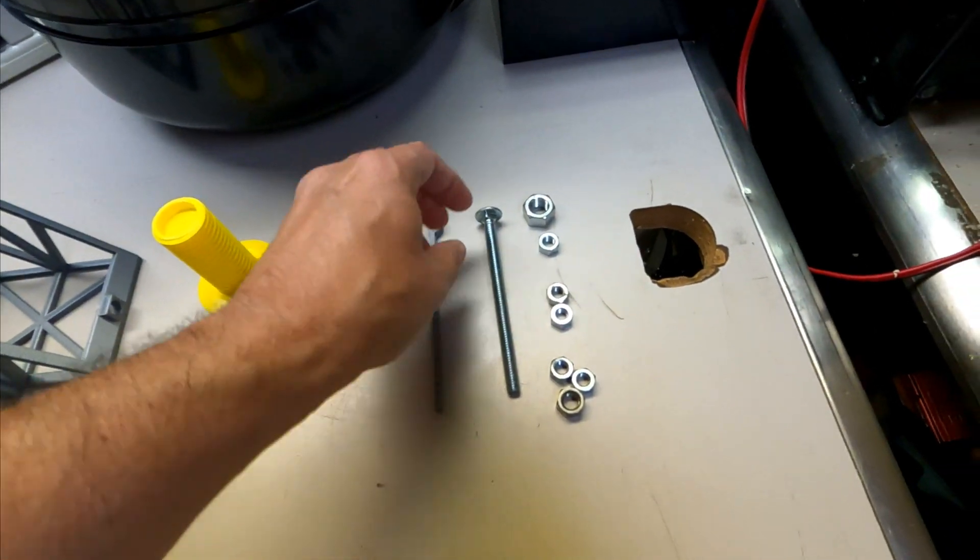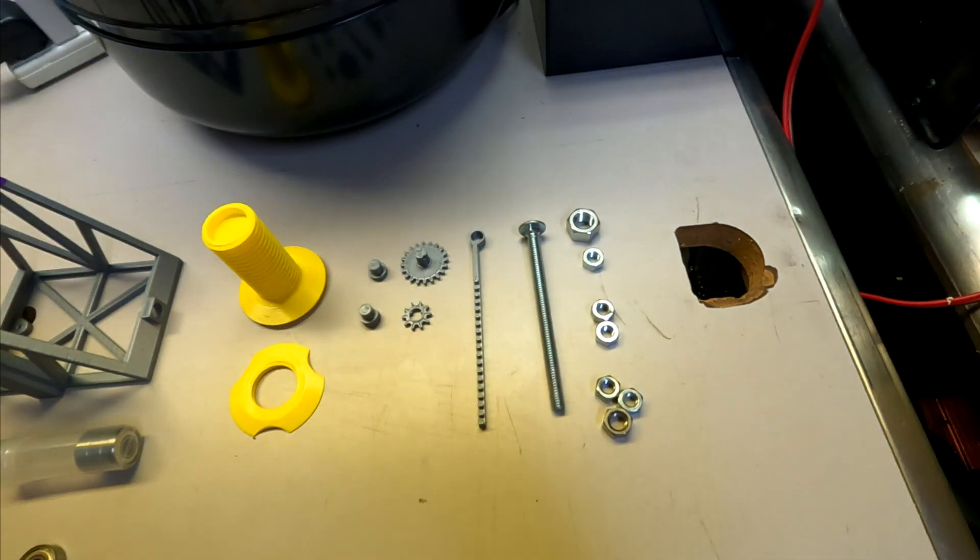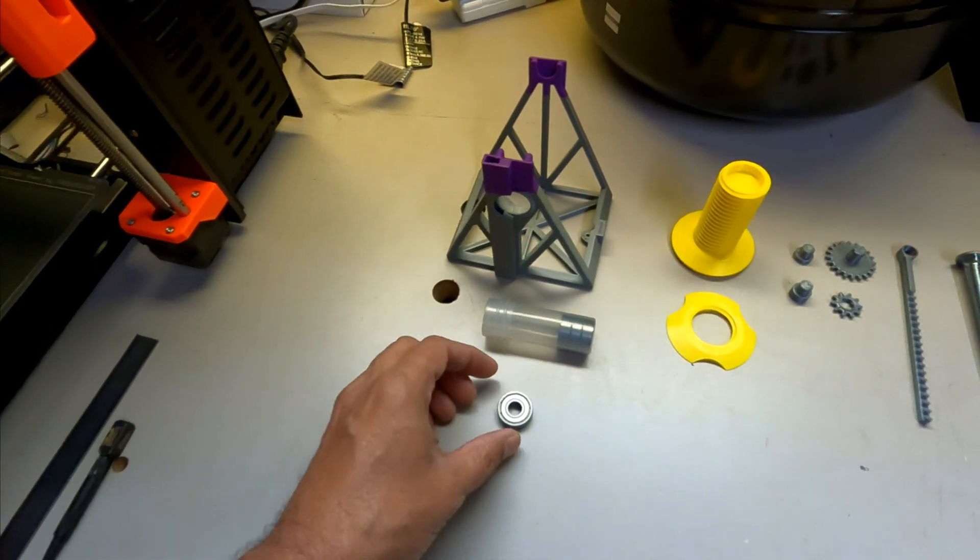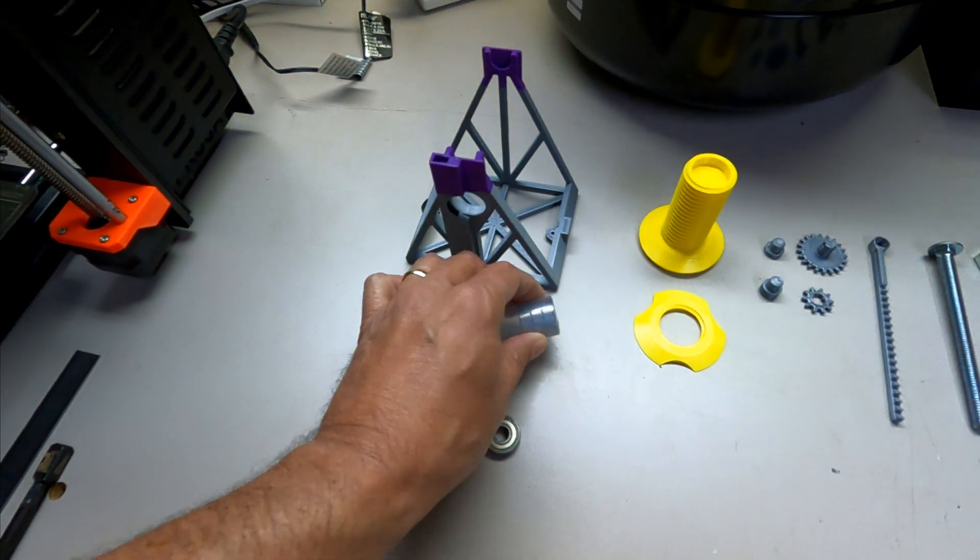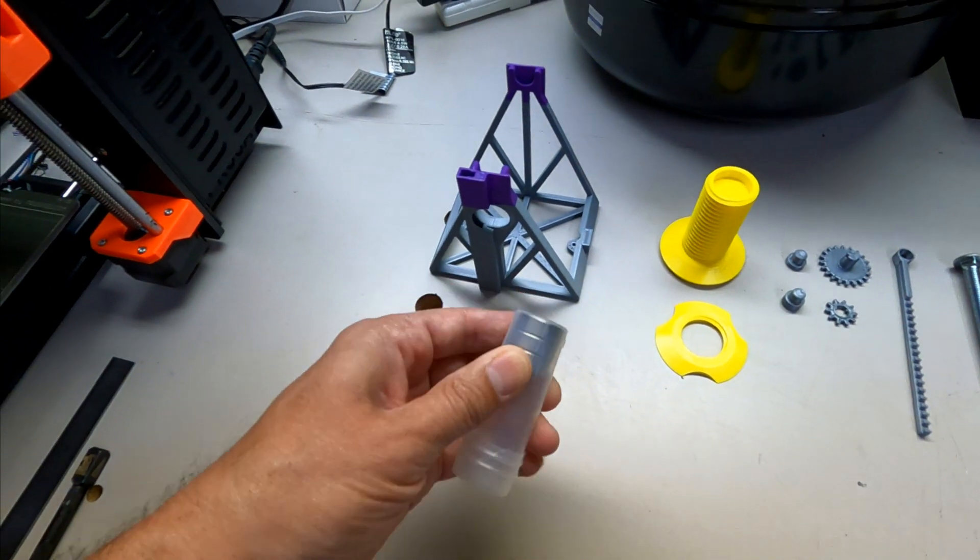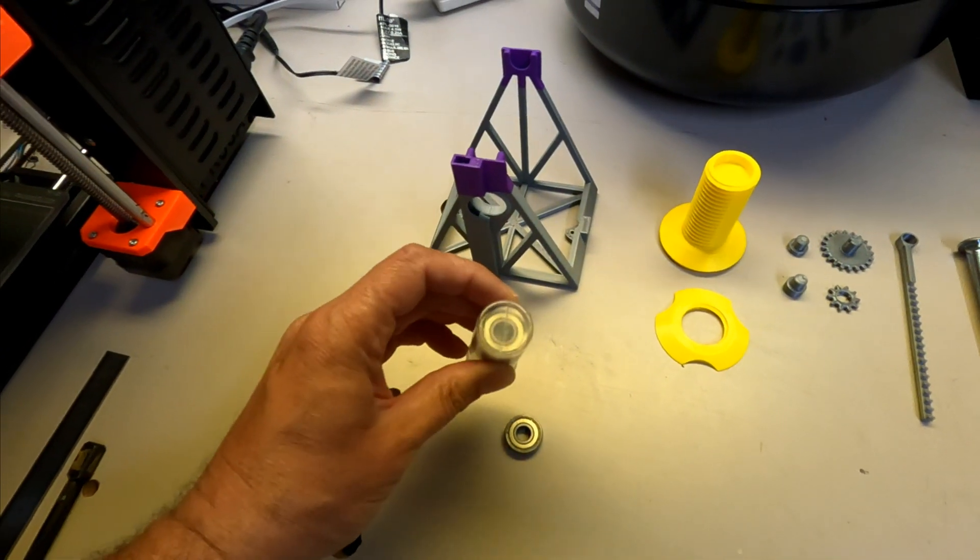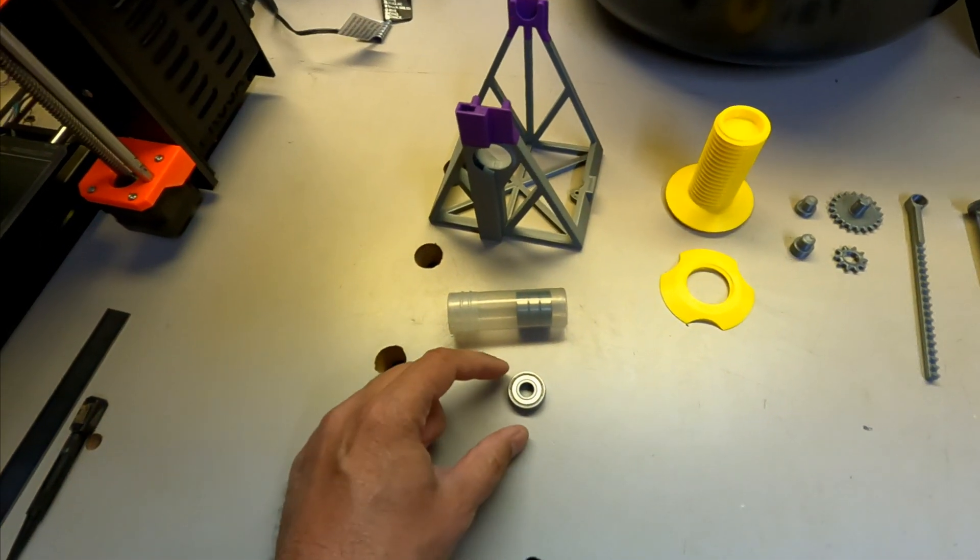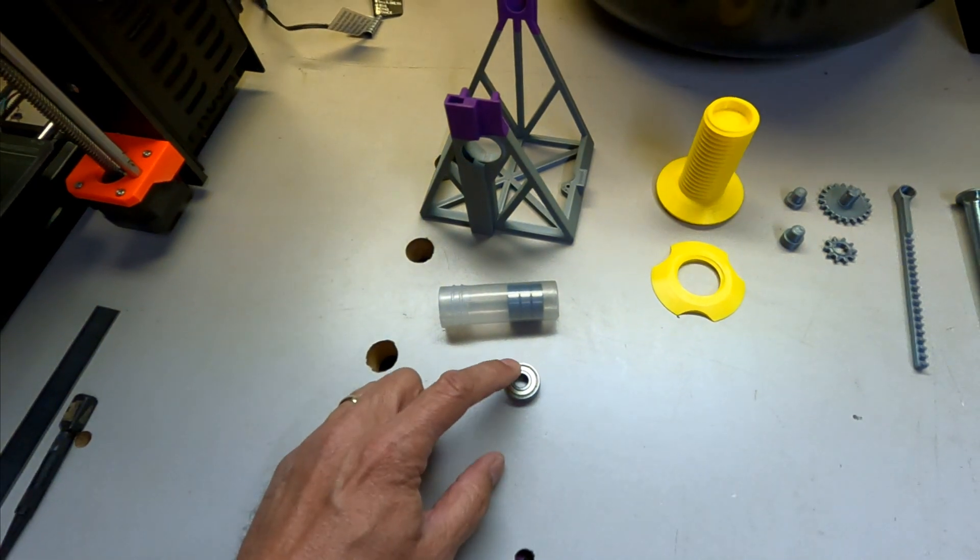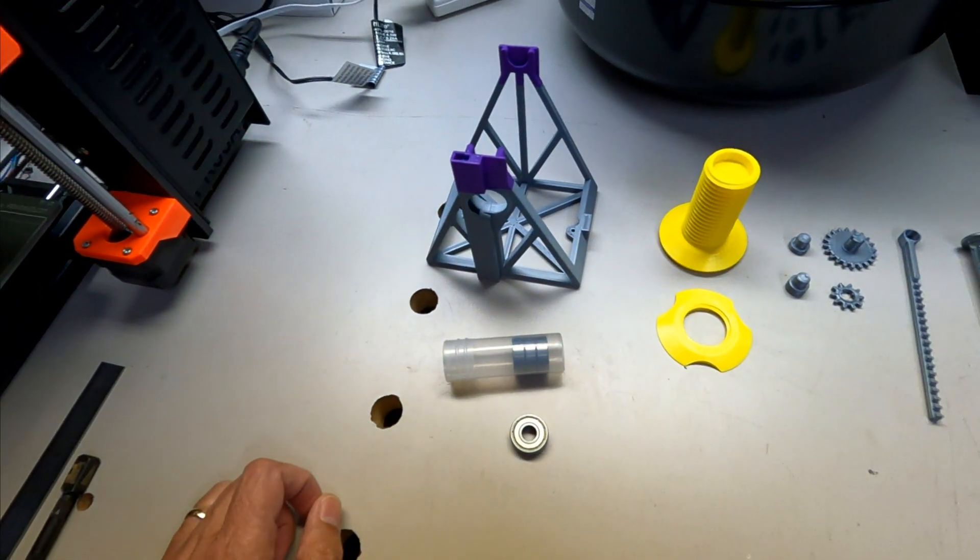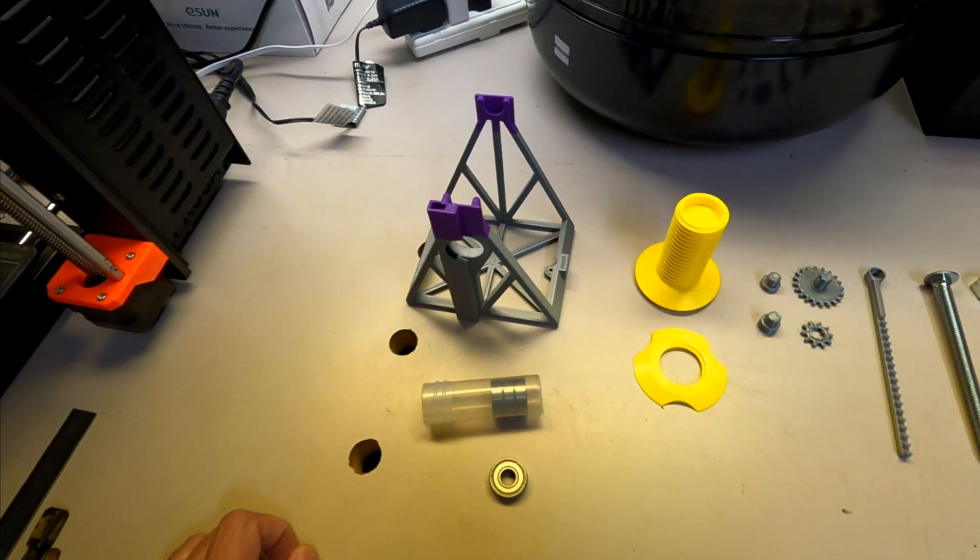This collection of steel parts weighs three ounces. We're going to start by taking three of the stock bearings that come with the Prusa MM2 and removing the side shields and cleaning out the grease so that these can be installed with the rest of the parts to make a friction-free spinning spool holder.